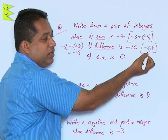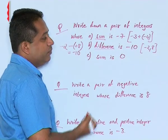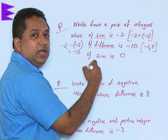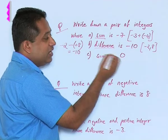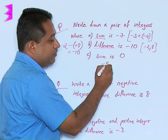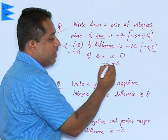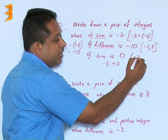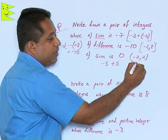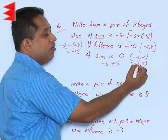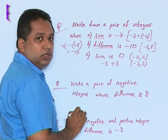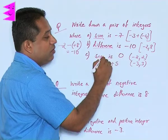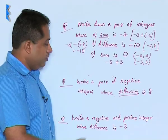These are not the only answers; there could be other answers to this question. For the third part, the sum is 0. This is easy because we can take a negative number and a positive number that are equal in magnitude. For example, minus 5 and plus 5 add up to 0, or minus 2 and positive 2, or minus 3 and positive 3. Addition of numbers equal in magnitude but opposite in sign will always give a total of 0.